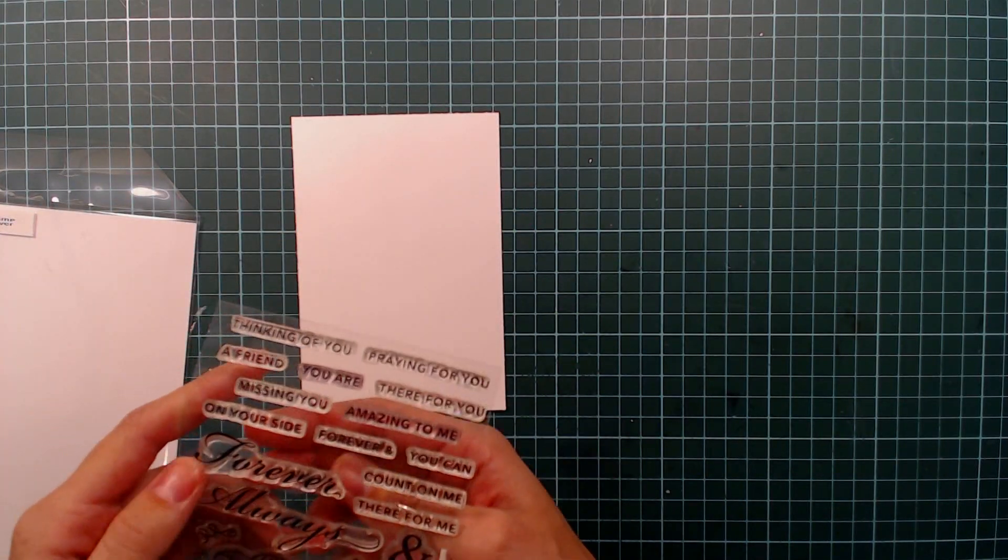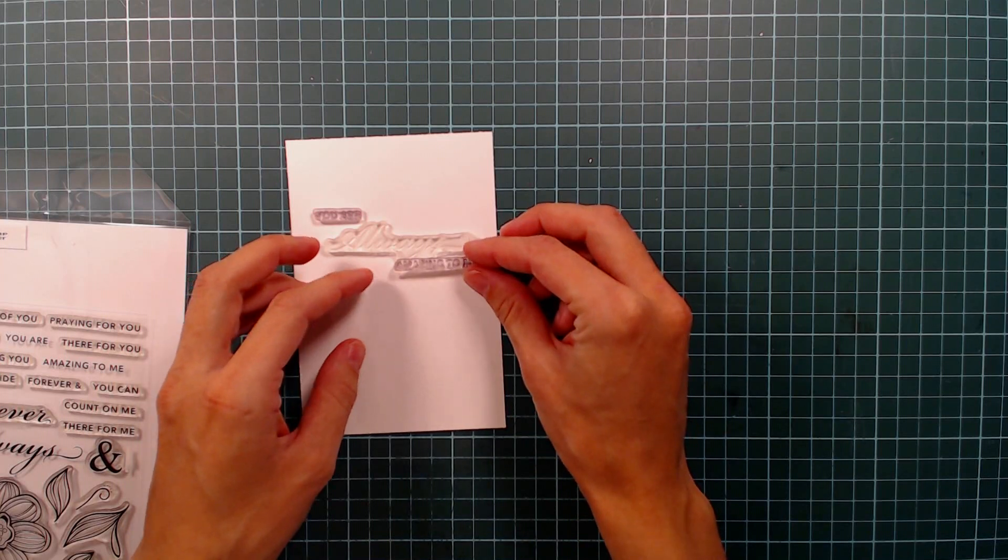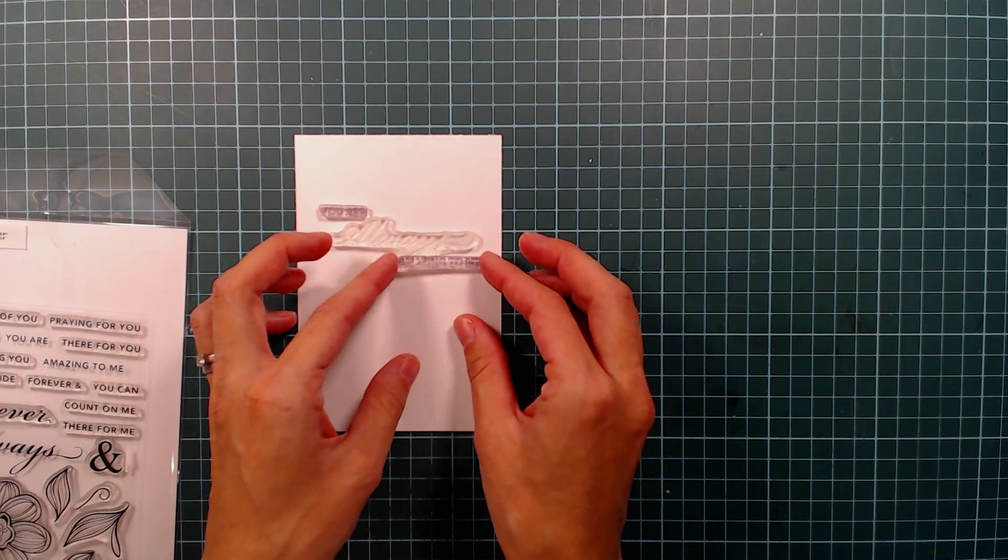I'm going to do some stamping on a piece of cardstock here, but I want to have a white background for my sentiment so I will be doing some masking.